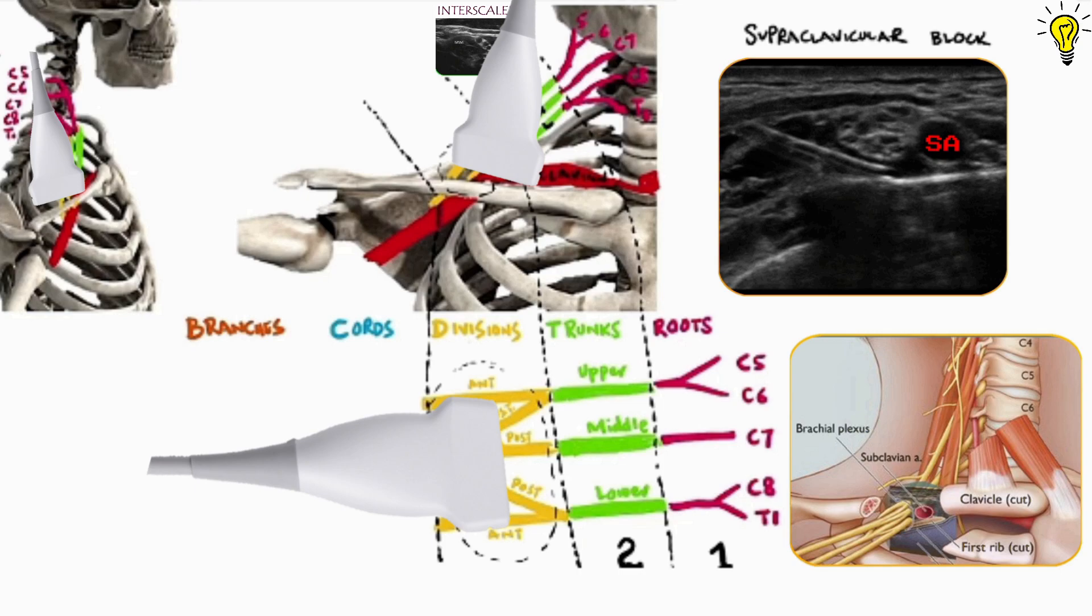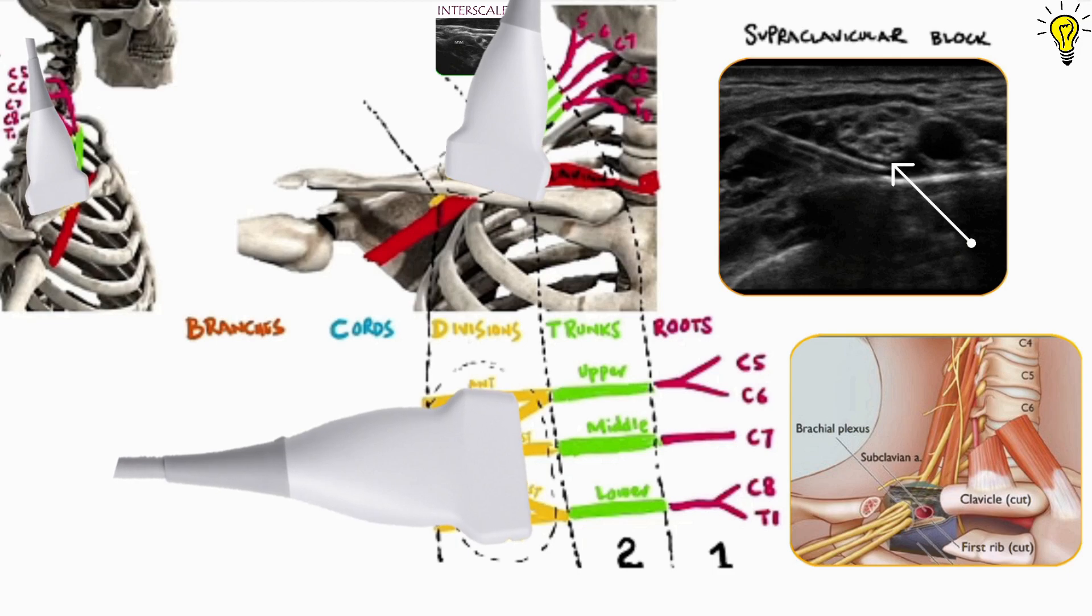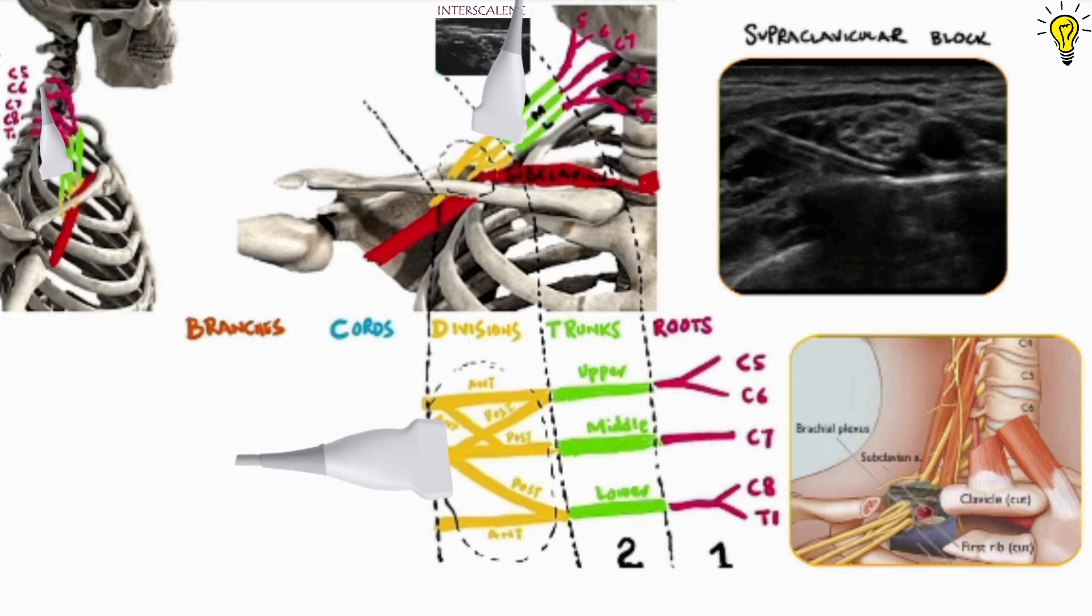Again, a static image with subclavian artery. The grape like divisions lateral to it. And you can also see a needle coming in from lateral side that is targeting the anterior and posterior divisions of the lower trunk. So this completes zone 3 of brachial plexus, the divisions.